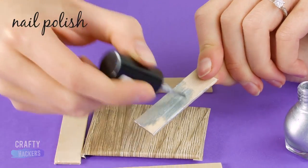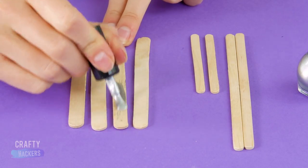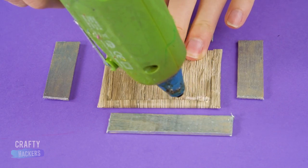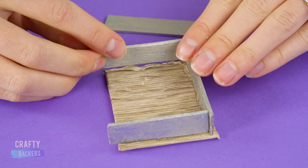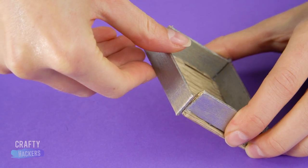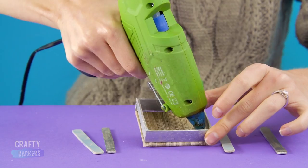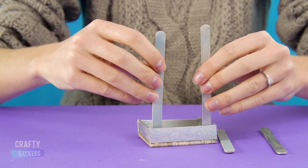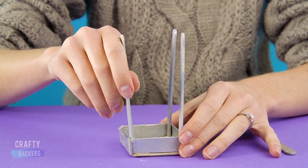Paint the sticks with silver nail polish. Then glue the sticks to the bottom side of your desktop. Glue in some thin popsicle sticks to make the legs of the desk.